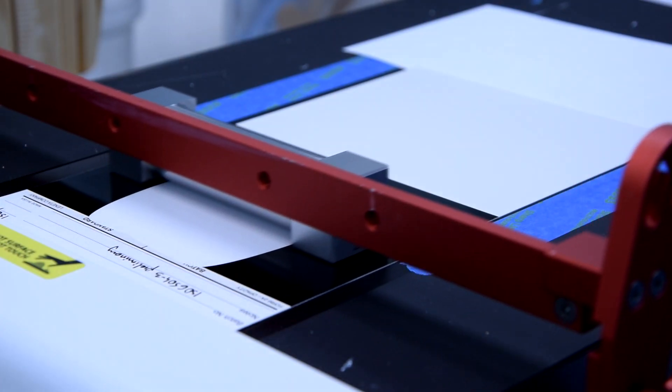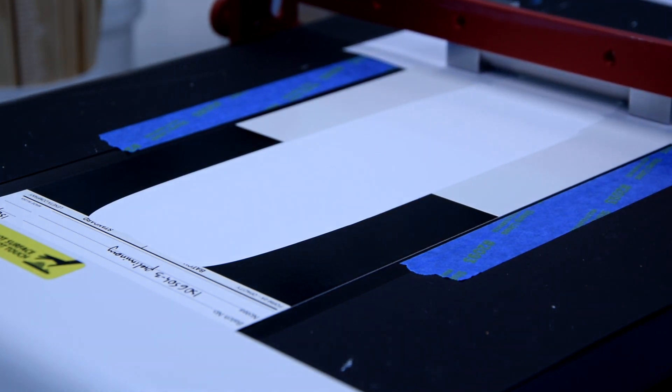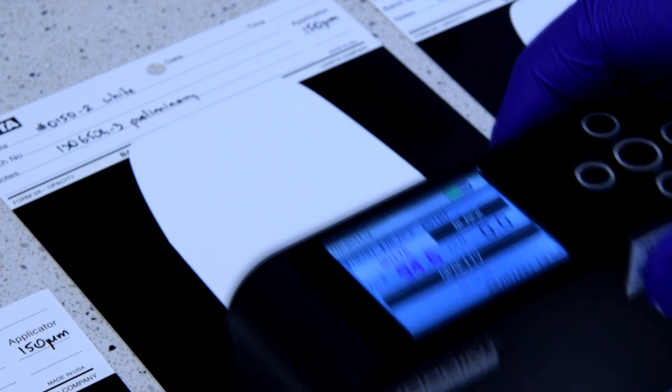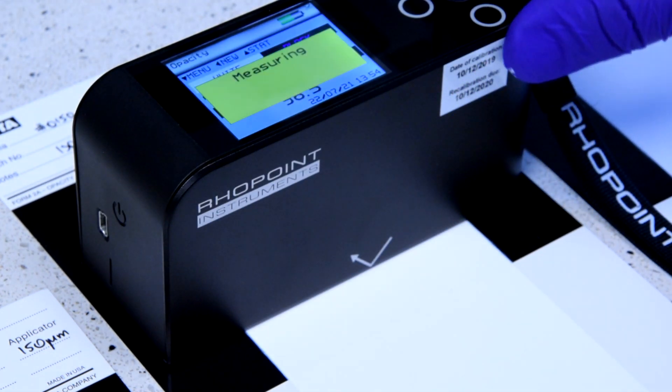After the stability test, we start testing the coatings to learn about the influence of different grades of titanium dioxide on a number of properties such as hiding power.